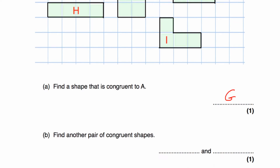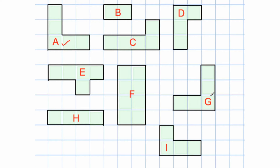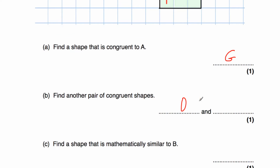Part B says: find another pair of congruent shapes. B is a small rectangle with two squares and there's no other rectangle that size, so B is not congruent to anything. C has four across and one up, but D is only three across and one up, so they're not congruent. Actually, D and I are congruent to each other — they're the same shape and size. So D and I.